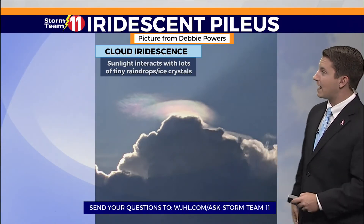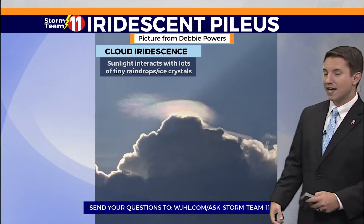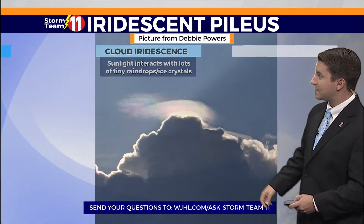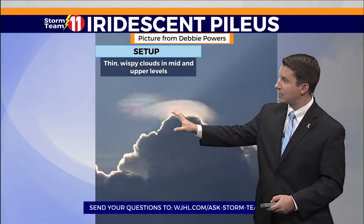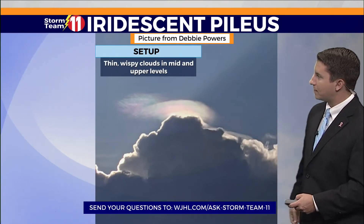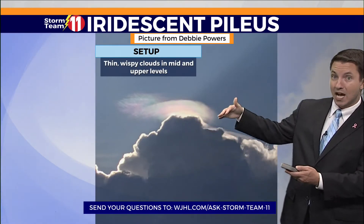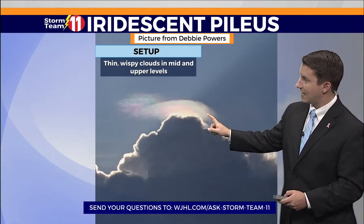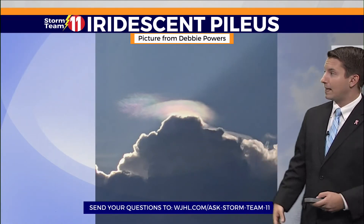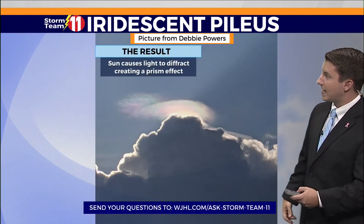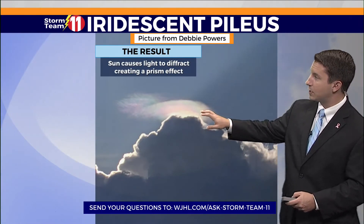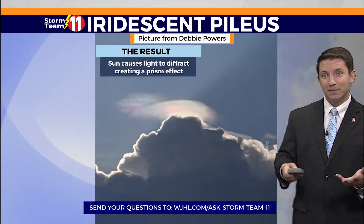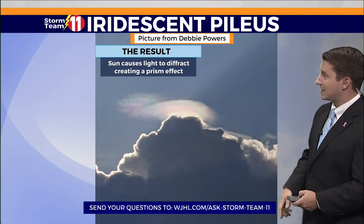First, sunlight interacts with lots of tiny raindrops and ice crystals. You need them to be uniform in size, and you need a wispy thin cloud like this in the mid and upper levels of the atmosphere — it doesn't have to sit on top of a cloud like it is in this case. But in order to get that iridescence, or that rainbow-like effect, you need those thin clouds, and the sun will actually cause the light to diffract or bend, creating a prism like you would see in the case of a rainbow.